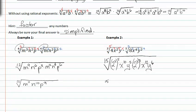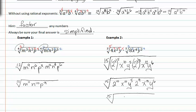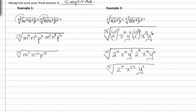Simplifying further, we get the fifteenth root of two to the tenth, x to the tenth, y to the fifth, times two to the ninth, x to the twelfth, y to the sixth. From here with the index of fifteen, combining the twos we get two to the nineteenth, x to the twenty-second, and y to the eleventh. One two will come out, with a remainder of two to the fourth, which is sixteen. One x will come out with a remainder of x to the seventh, and y will stay inside. Don't forget that index — and that's your final answer.